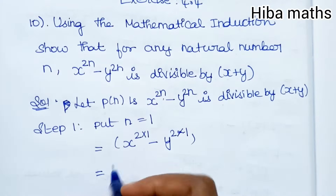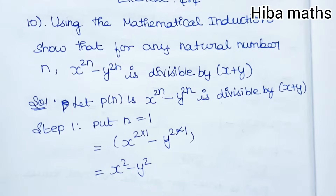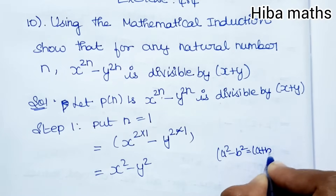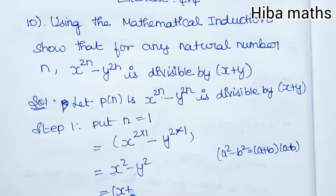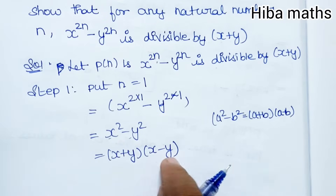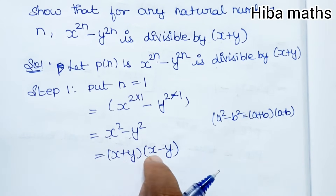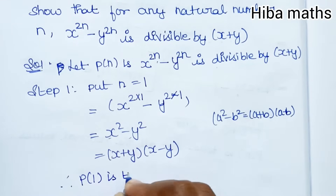We have x² minus y² and we know this formula: a² minus b² equals (a+b)(a-b). So x² - y² = (x+y)(x-y), where x+y is a factor. Since x+y is a factor, the expression is divisible by x+y. Therefore P(1) is true.